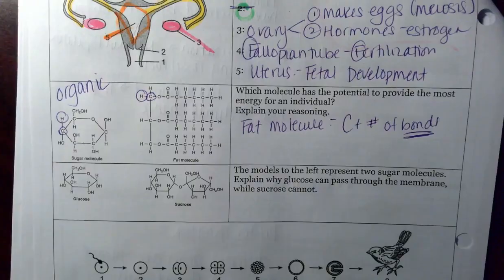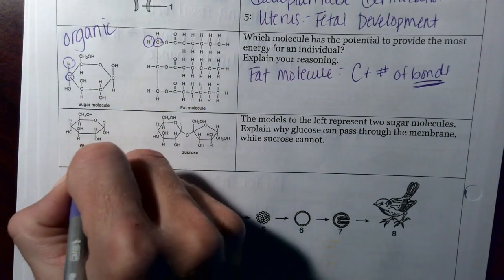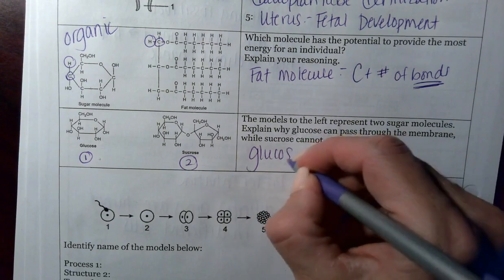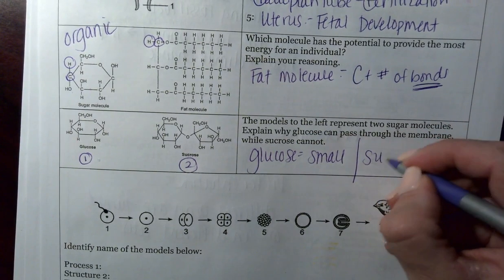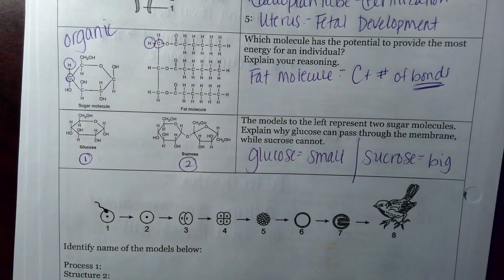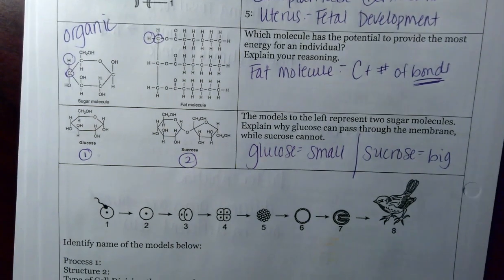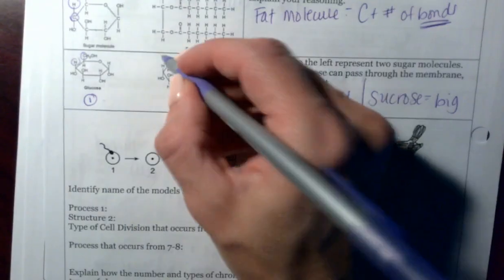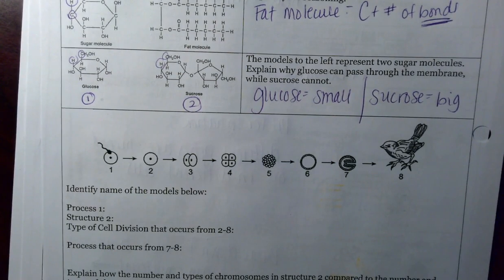The models to the left represent two sugar molecules. Explain why glucose can pass through the membrane while sucrose can't. Note, this is one ring. This is two rings. It all has to do with size. Glucose is small. Small things can fit through. Sucrose, comparatively, is big. Not as big as starch because you'd have many sugar molecules attached together if it was starch. Again, these are both organic because they have a carbon and hydrogen located in them. No, they don't have to be touching in order to count.